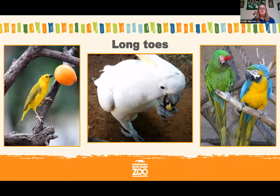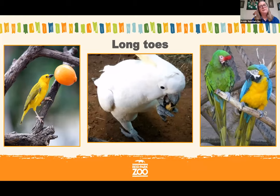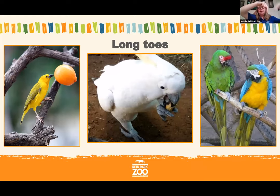Long toes are another feature of grasping feet. A lot of times when people think of long toes they think of birds. Birds have more than two toes — except for the ostrich, which only has two. Other birds usually have three or four toes, and with many birds, two toes face backwards and two toes face forward.